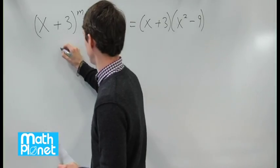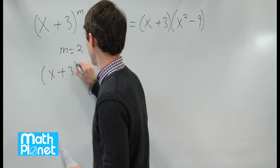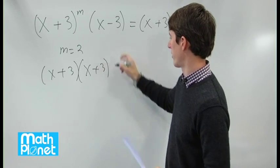So let's try m equals 2, and then we'll have x plus 3 times x plus 3, and then this again.